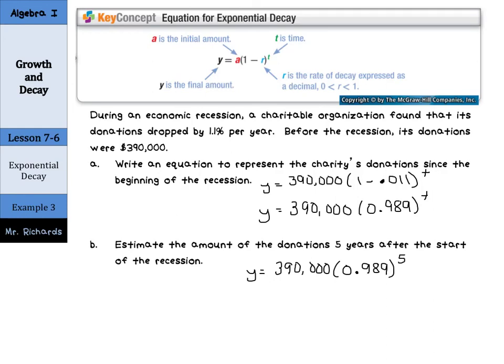And after I take 0.989 to the fifth power and multiply it by 390,000, we have a solution of Y equals $369,016 and about 74 cents. And that's our solution.